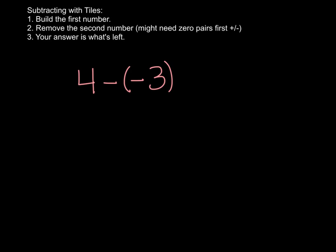Let's take a look at this example though. Here we have 4 minus negative 3. So it tells me I'm starting with 4 and I have to take away 3 negatives. So let's start by building the 4. So that's 4 positives. And then it says remove the second number. Well, the second number here is a negative 3. Well, I don't have any negatives on my drawing. So how can I take them away if they're not there?